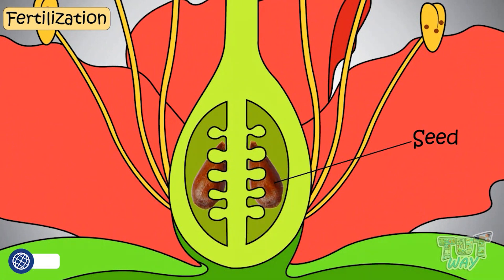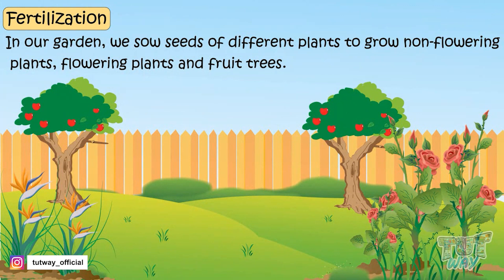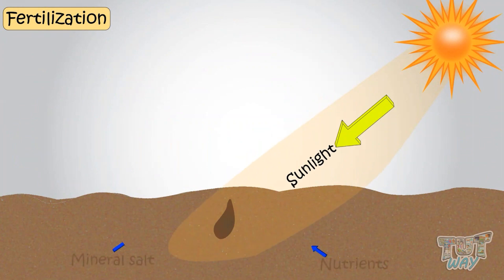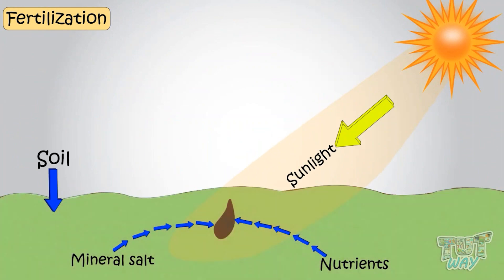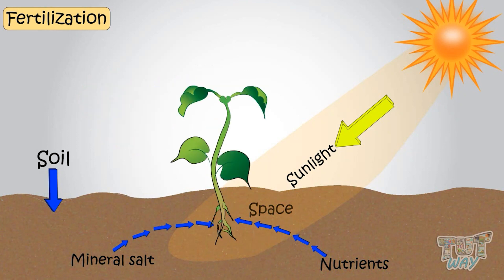In our garden, we sow seeds of different plants to grow non-flowering plants, flowering plants, and fruit trees. When a seed is sown, it requires enough sunlight, mineral salts, water, space, and air to grow into a new plant.